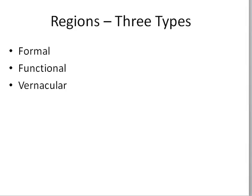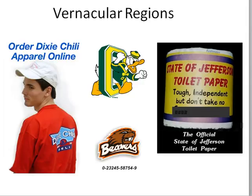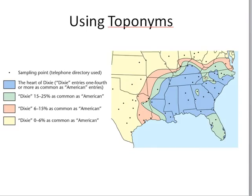The third type of region is a vernacular region. These are regions where people feel pride and a voluntary association. In Dixie, if you're in that vernacular region, you want that name on your logos and in your businesses. Similarly, if you're in the state of Jefferson in Oregon, you want Jefferson to be prominent. You could also have a vernacular region of the Ducks and the Beavers. It's just another way to look at how culture is arranged.